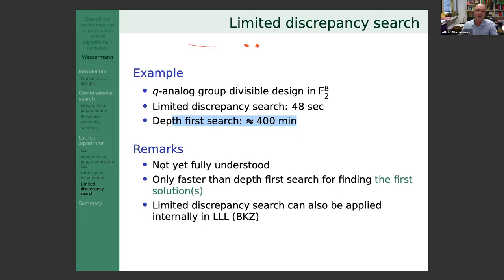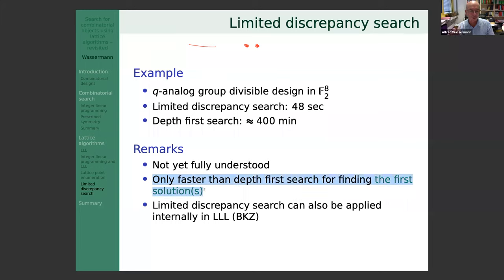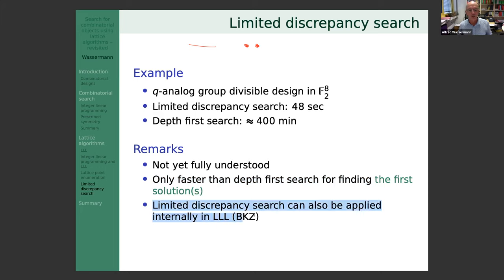By comparison, the usual depth-first search would take at least 400 minutes — not seconds — to find the first solution. So it's a radical improvement. It's not yet fully understood how it relates to the quality of the lattice basis reduction — there's much research needed. Note: limited discrepancy search is only faster when looking for one or a few solutions; for finding all solutions, depth-first search is always faster since LDS has overhead. Limited discrepancy search can also be used inside LLL, which is called blockwise Korkine-Zolotareff (BKZ) reduction.